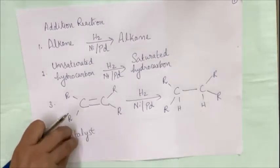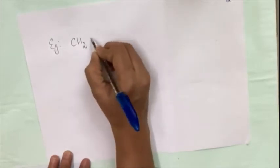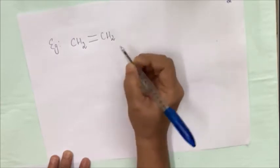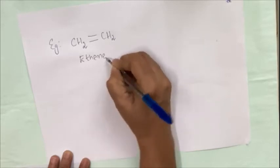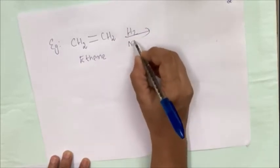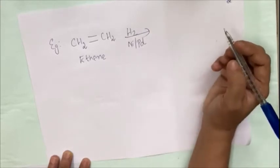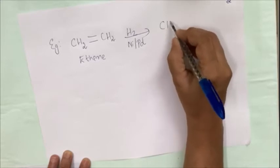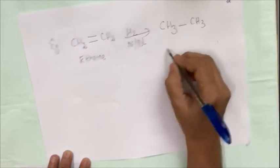Let us take one example of addition reaction. Now you have learned the definition of addition reaction clearly. Let me show you one example where we need to write an unsaturated molecule getting converted to a saturated molecule. The molecule I have selected is CH2=CH2, which is ethene, an alkene. Addition of hydrogen takes place across the double bond in the presence of nickel or palladium as catalyst.